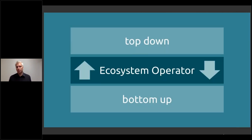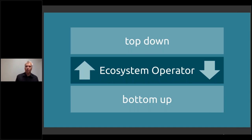The ecosystem operator's role sits in between the bottom-up activities and top-down activities. The key is that they don't represent either party — they don't represent the government, the funding organization, the entrepreneurs, the accelerators, or the big companies. They don't represent any of those specifically, but they represent all of them collectively.